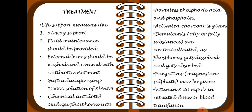Treatment: First, life-supporting measures including airway support and fluid maintenance should be provided. External burns should be washed and covered with antibiotic ointments. Gastric lavage using a 1:5000 solution of KMnO4 — the chemical antidote — which oxidizes phosphorus into harmless phosphoric acid and phosphates. Activated charcoal is given. Oils and fatty substances are contraindicated as phosphorus dissolves in them and gets absorbed. A purgative like magnesium sulfate may be given if needed.